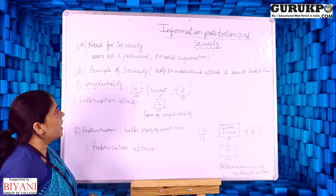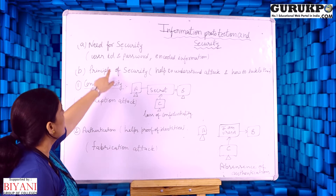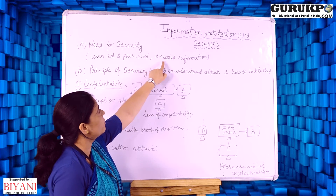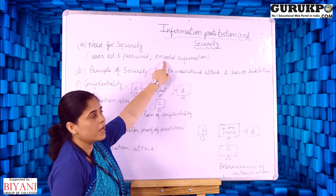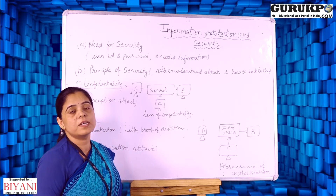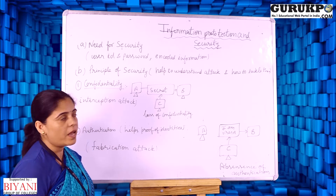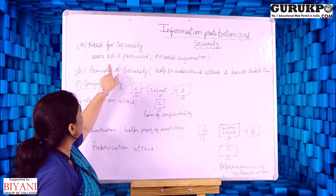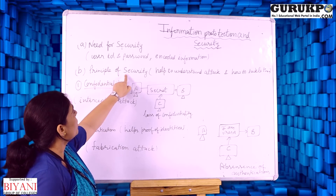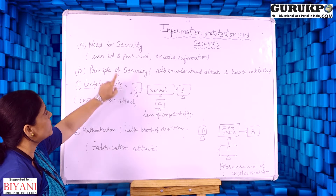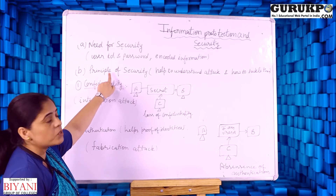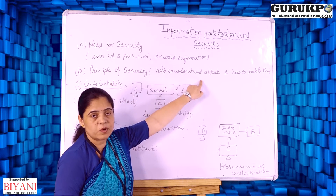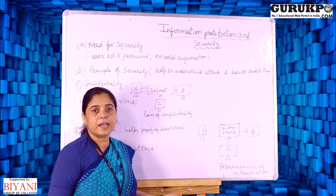In earlier processing, there was only user ID and password. The second form of security is encoded information, which is also called cryptography — we will discuss that later as it is a vast topic. Today I will discuss the principles of security, which are important for understanding types of attacks and how to tackle them.